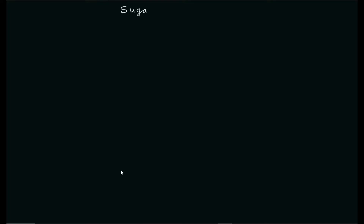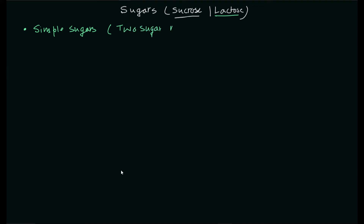Let me write down the topic: sugars. In this video I will focus on lactose, though I'm also writing sucrose alongside it because both topics are important. These molecules are also known as simple sugars because they have just two monomeric units bound together — they are disaccharide molecules. In the case of lactose you have glucose and galactose; in the case of sucrose you have glucose and fructose.